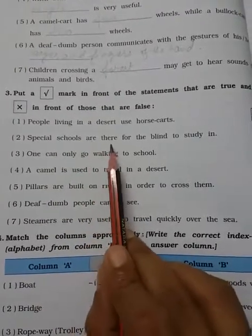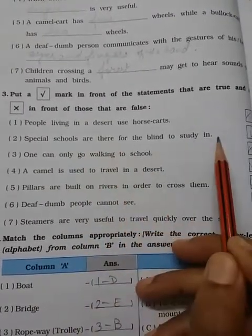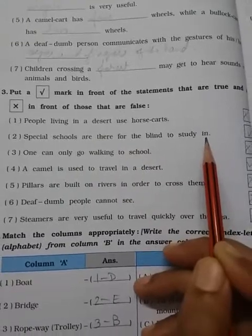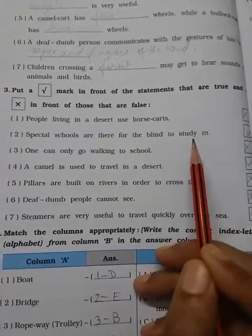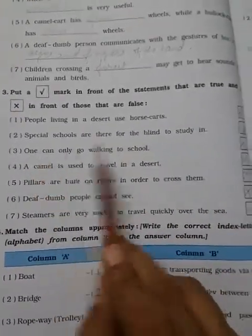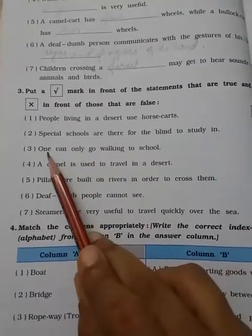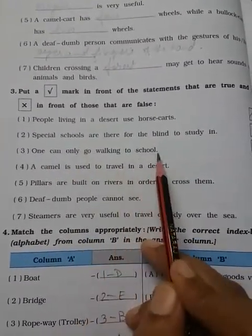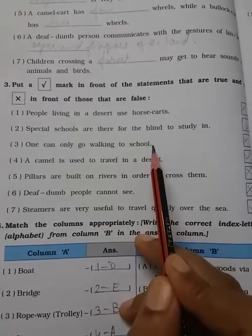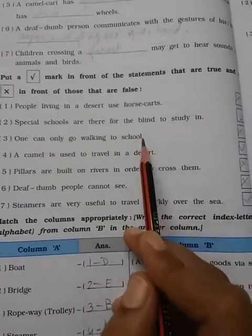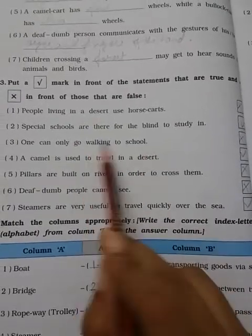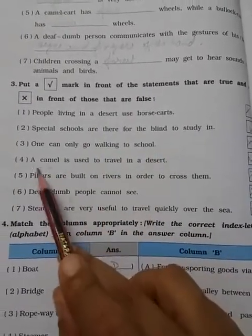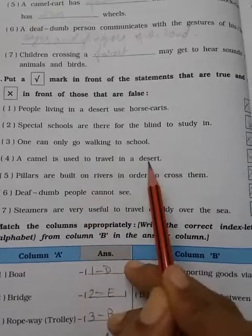Special schools are for the blind to study. Yes, they need special school. They cannot study in like a normal school. The answer will be yes. One can only go walking to school. No, they can use the vehicle like cycle, bike, car, auto rickshaw. So answer will be wrong.